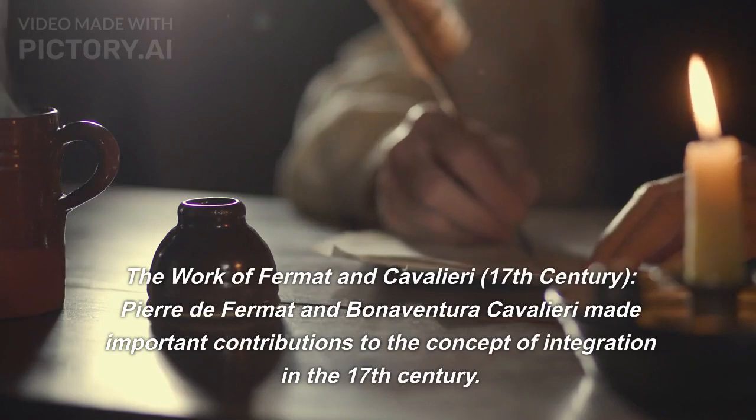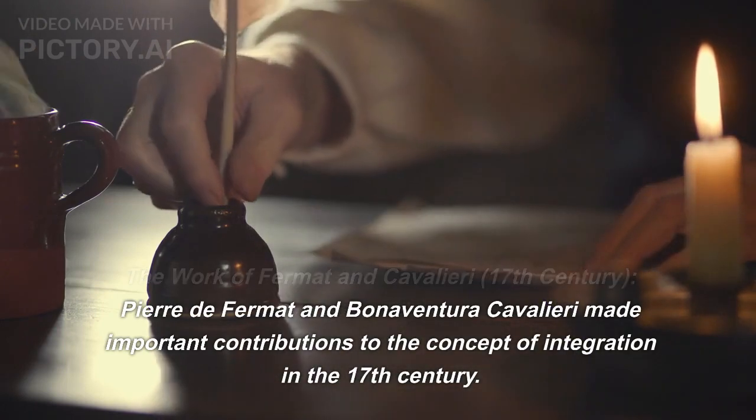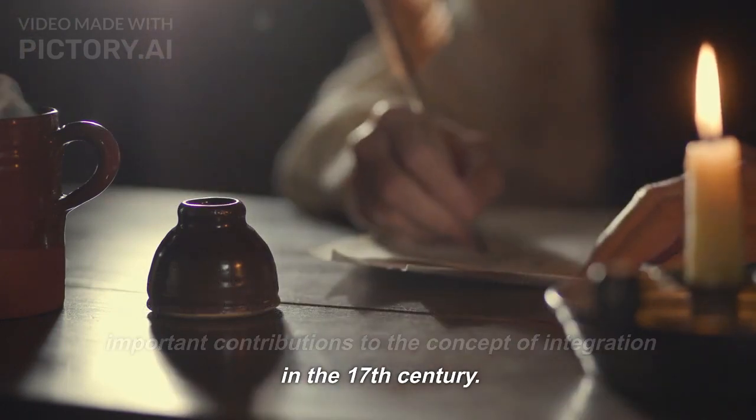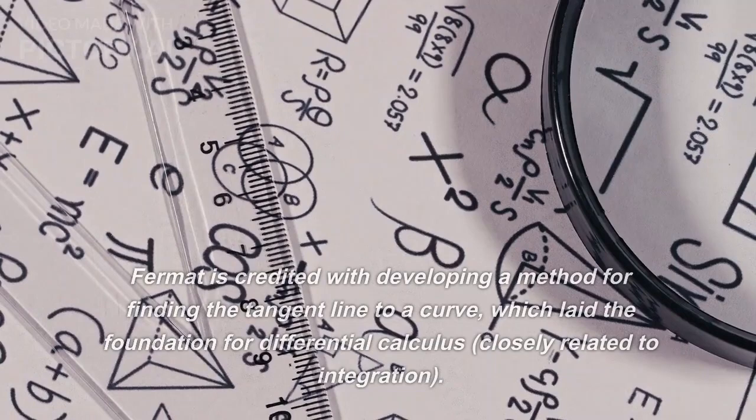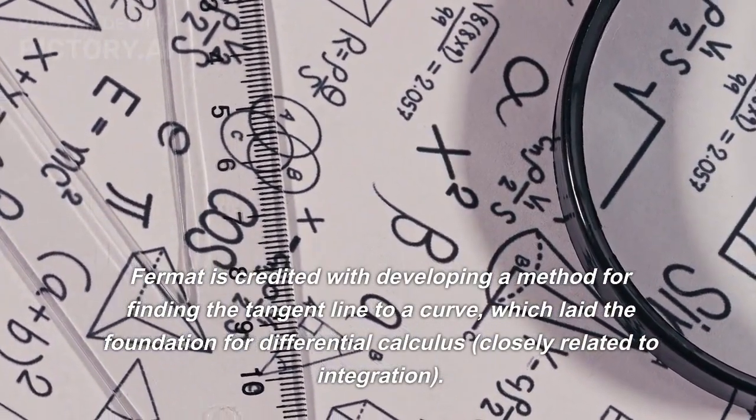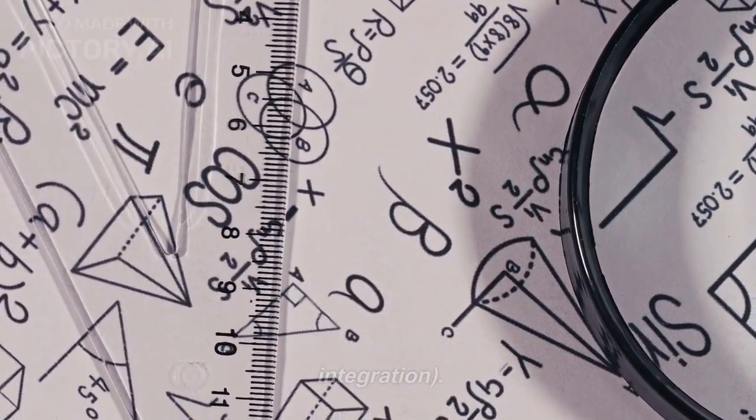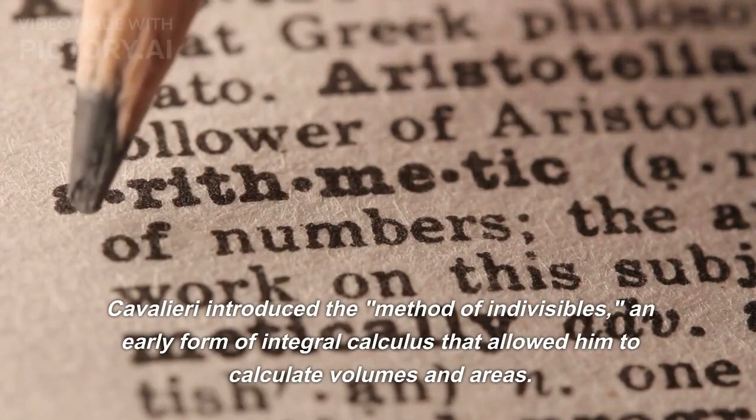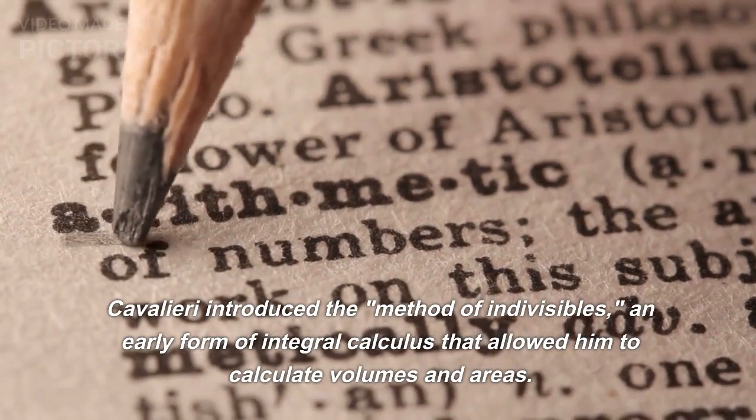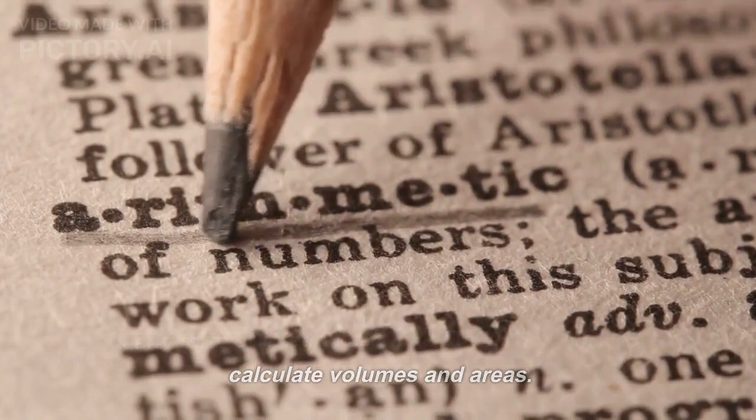The work of Fermat and Cavallari, 17th century. Pierre de Fermat and Bonaventura Cavallari made important contributions to the concept of integration in the 17th century. Fermat is credited with developing a method for finding the tangent line to a curve, which laid the foundation for differential calculus, closely related to integration. Cavallari introduced the method of indivisibles, an early form of integral calculus that allowed him to calculate volumes and areas.